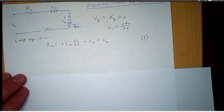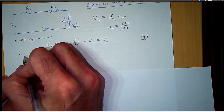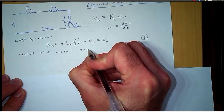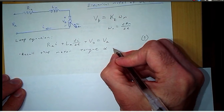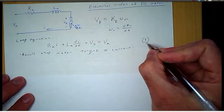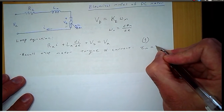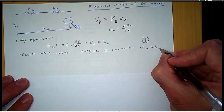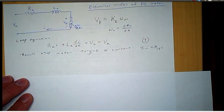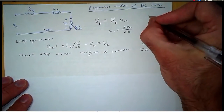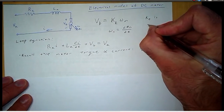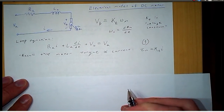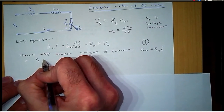The motor torque is proportional to the current. The motor torque τM is equal to KT — the torque constant — times I. So here we had KE as the voltage constant, and KT is the torque constant.